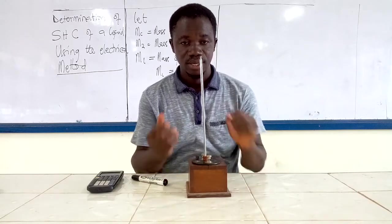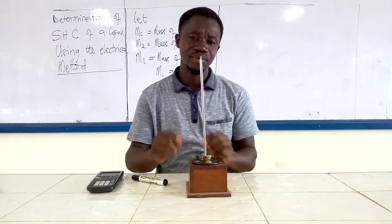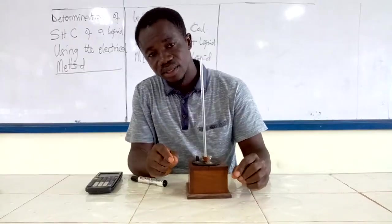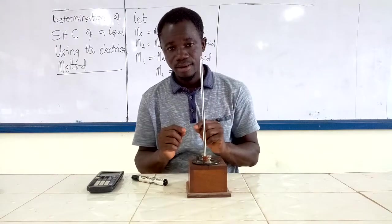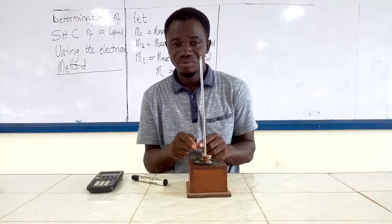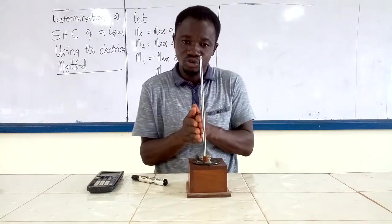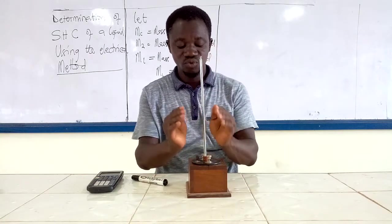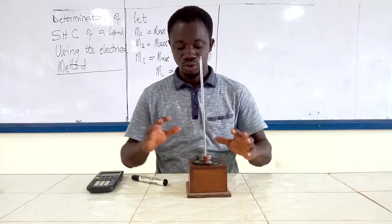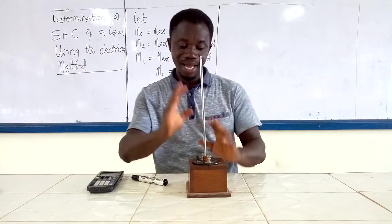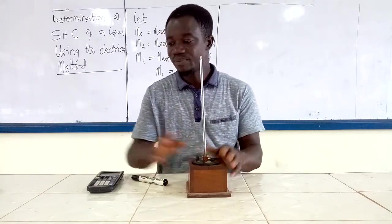We let the system stay for some time. Why? We are going to determine the initial temperature of the liquid and the calorimeter together. If I measure right now, the temperature of the liquid may be different from the temperature of the calorimeter. So when I bring them together, I have to wait for the two of them to reach thermal equilibrium. Whilst waiting for equilibrium, I will connect the circuit.